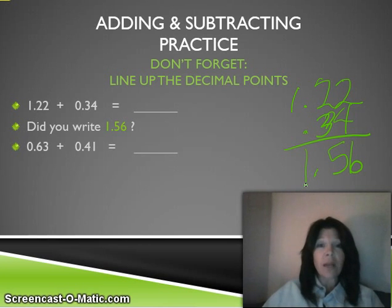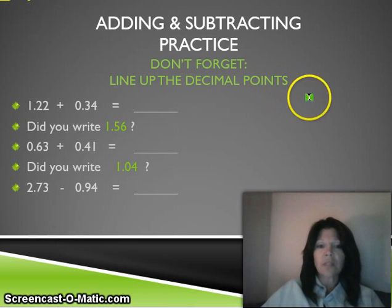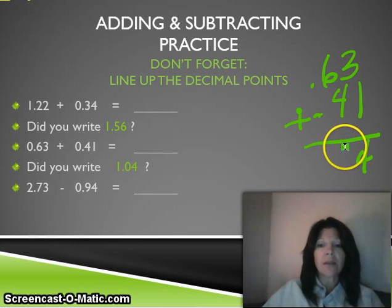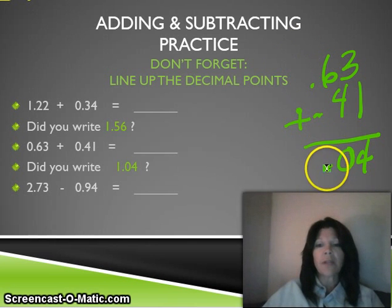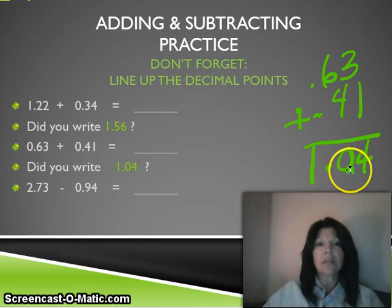Your next problem: sixty-three hundredths plus forty-one hundredths. Add those together, write your answer in your journal, then continue the video. Did you get one and four hundredths? Line up your decimal points — sixty-three hundredths plus forty-one hundredths. Three plus one is four. Six plus four is ten, so put your zero and carry the one. When you carry the one, it goes to the other side of the decimal point — bring the decimal point down, then bring the one over. You should have gotten one and four hundredths.